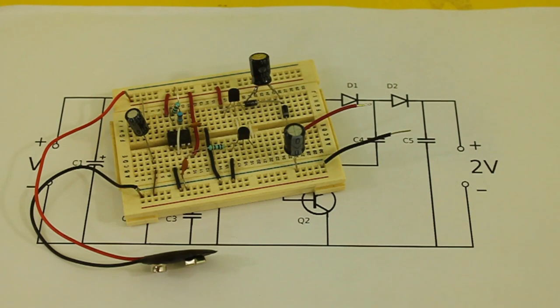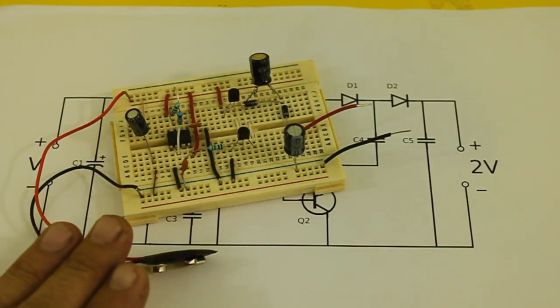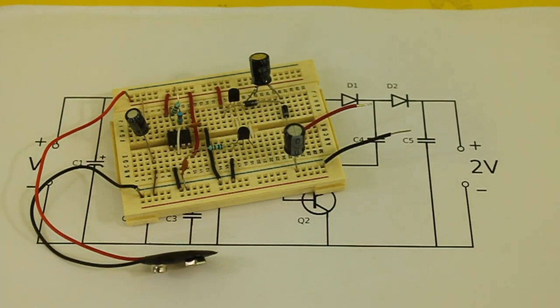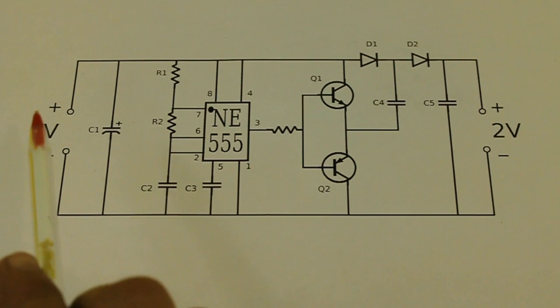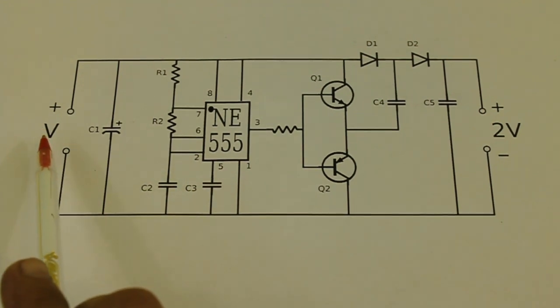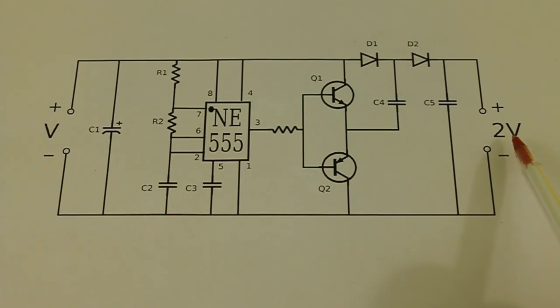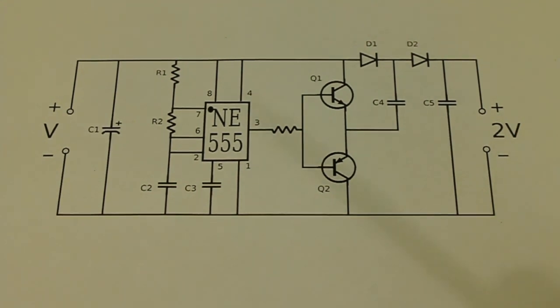Today I want to show you this circuit which is a DC to DC voltage doubler. This is the circuit. Here we connect a voltage source and at the output we will have double that voltage minus some losses from the diodes and transistors.